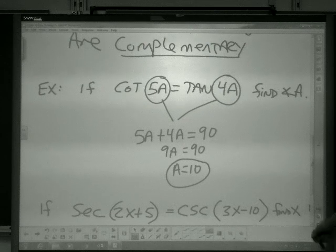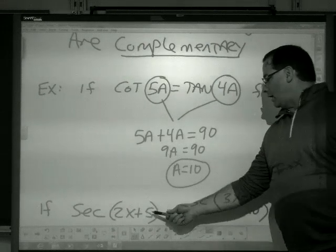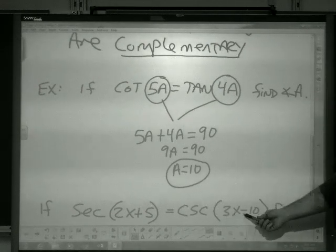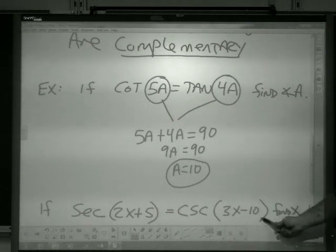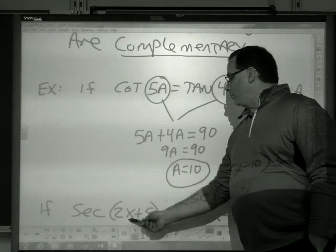Try another one. If secant 2x plus 5 equals cosecant 3x minus 10, solve for x. So again, these two angles are complementary.